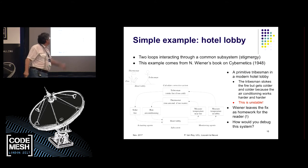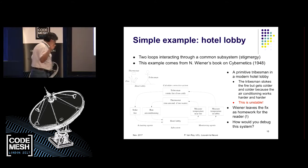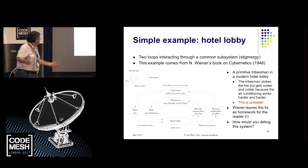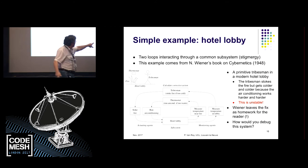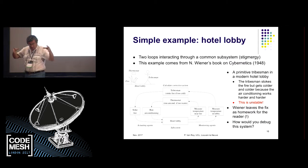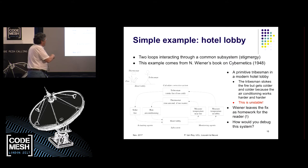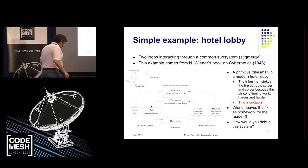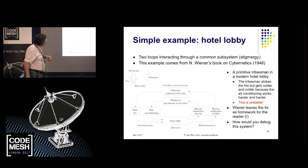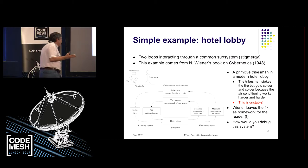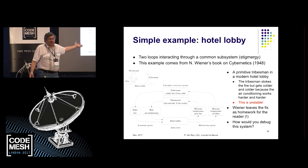A primitive tribesman who doesn't know about modern technology walks in; it feels cold, so he stokes a fire in the lobby. That's the second loop. The hotel lobby is the system where these two loops are interacting. This is an unstable situation — it depends on the strength of the air conditioner and the amount of wood the tribesman has. The air conditioner works harder because there's a source of heat; the tribesman gets colder, so he makes the fire bigger. This is unstable.